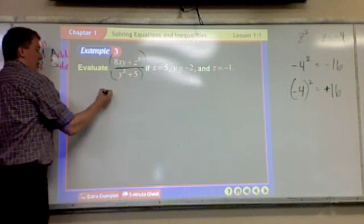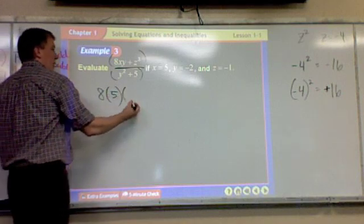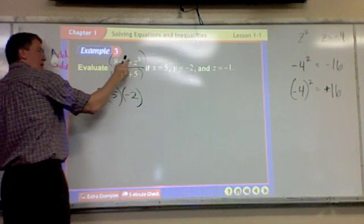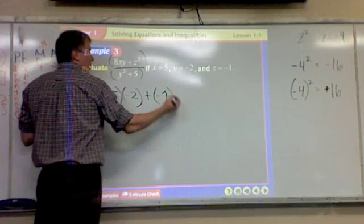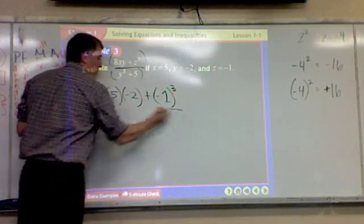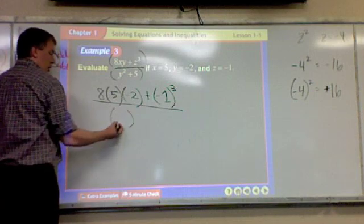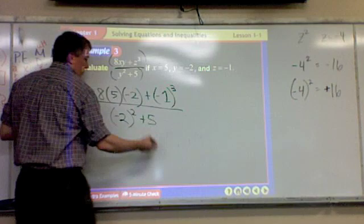So here we go. 8, what's x? 5. What's y? Negative 2. So 8, 5, negative 2, plus what's z? Negative 1 cubed. So I'm just plugging in numbers. What's y on the bottom? Negative 2 squared plus 5.